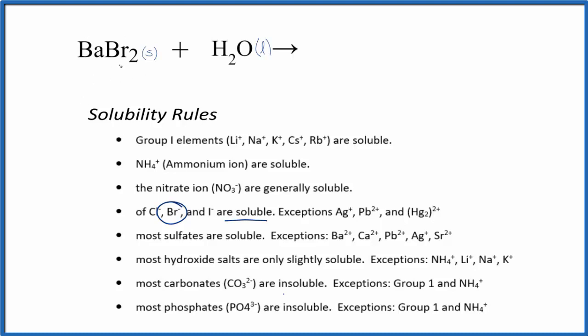This barium bromide is going to be soluble. It's going to dissolve and dissociate into its ions. Barium is in group two, so that'll be 2+, and the bromide ion is 1-. We have two of those.